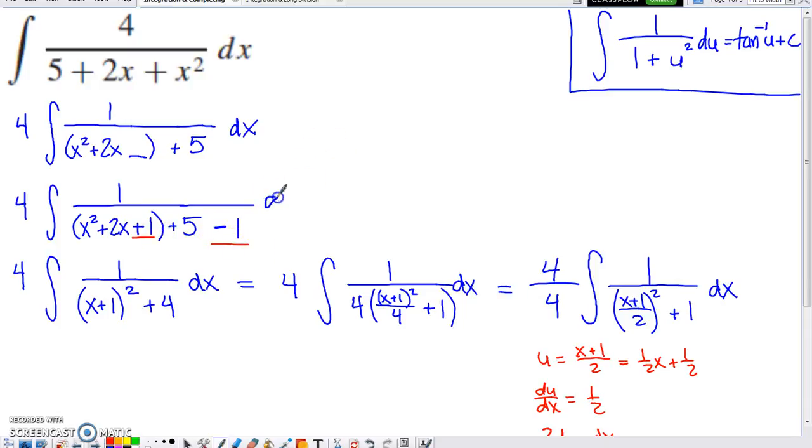So I put a plus 1 here to complete the square, and I offset that by putting a minus 1 out here. I'm missing my differential there for some reason. Let me get that in.